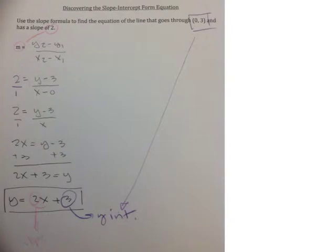Now this page just helps you discover the slope-intercept form equation and why it is as it is. So if you use the slope formula to find the equation of a line that goes through (0, 3) and has a slope of 2, this just kind of walks you through how we get to that actual slope-intercept form equation of Y equals MX plus B.